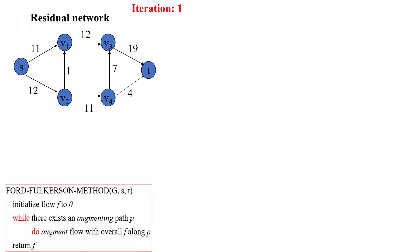In this video we will discuss applying the Ford-Fulkerson algorithm to identify the maximum flow in a given network. The network has six vertices. S to V1 has a maximum capacity of 11 units, V1 to V3 is 12 units, V3 to T is 19 units, and every edge has its own capacity.